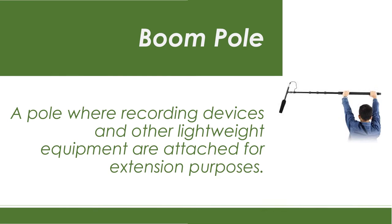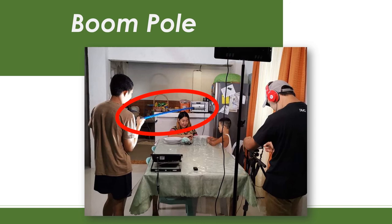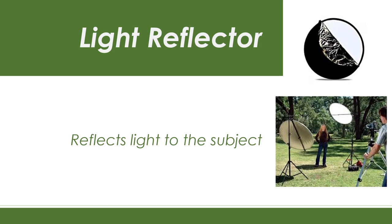In our case, we used a lapel mic in our studio recording and placed it in an improvised boom pole for recording of the insert video. A boom pole is a pole where recording devices and other lightweight equipment are attached for extension purposes. As we didn't have a boom pole, we were able to utilize a PVC pipe to extend our lapel mic. A light reflector can reflect light to the subject and can be used as a diffuser to balance light. Reflector is useful when shooting is done outdoors.